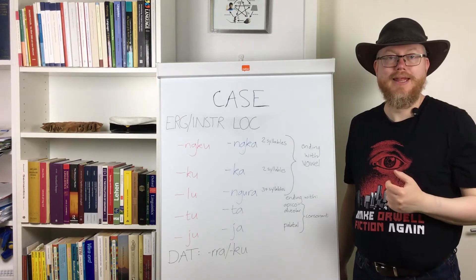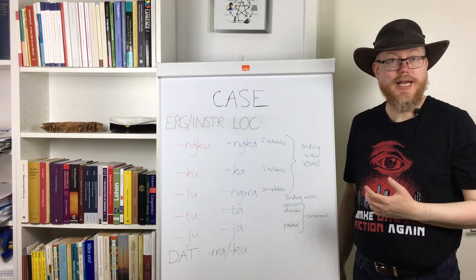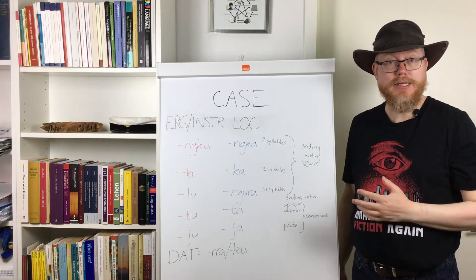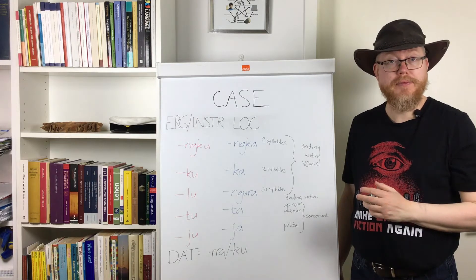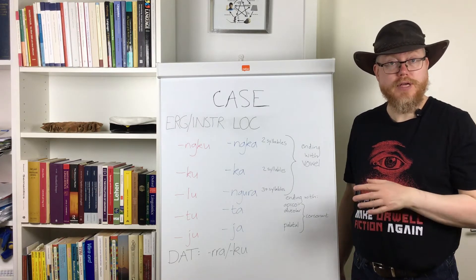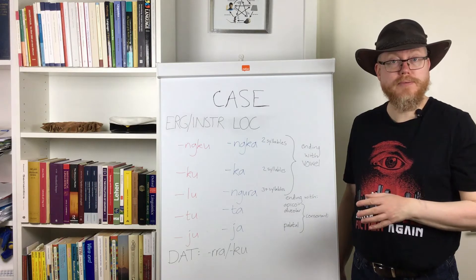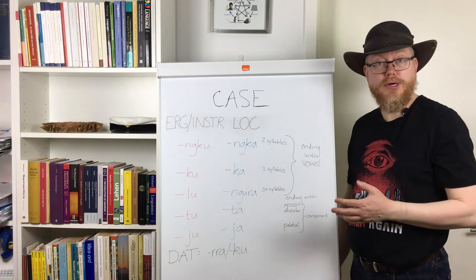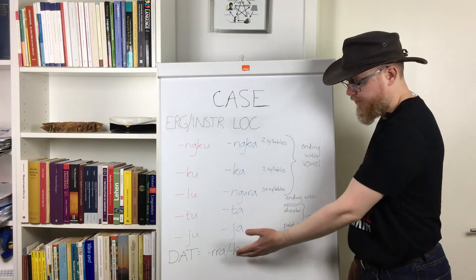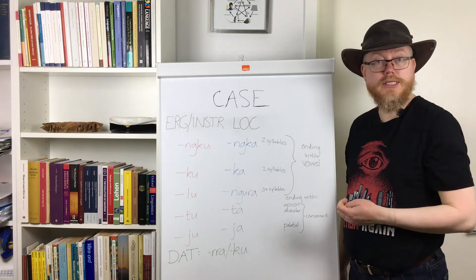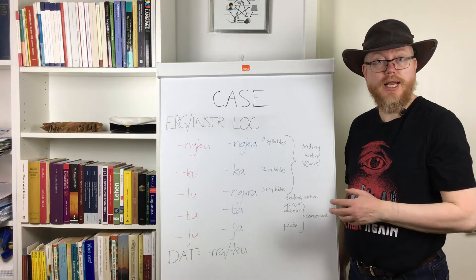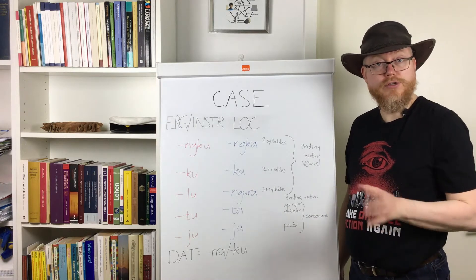Hi. Today I thought I'd introduce the other cases that Pama-Nyungan languages share, apart from the accusative case used with pronouns. I think I'll start from the bottom here with 'gu'. Gu is used as a dative marker in Pama-Nyungan languages all over Australia.